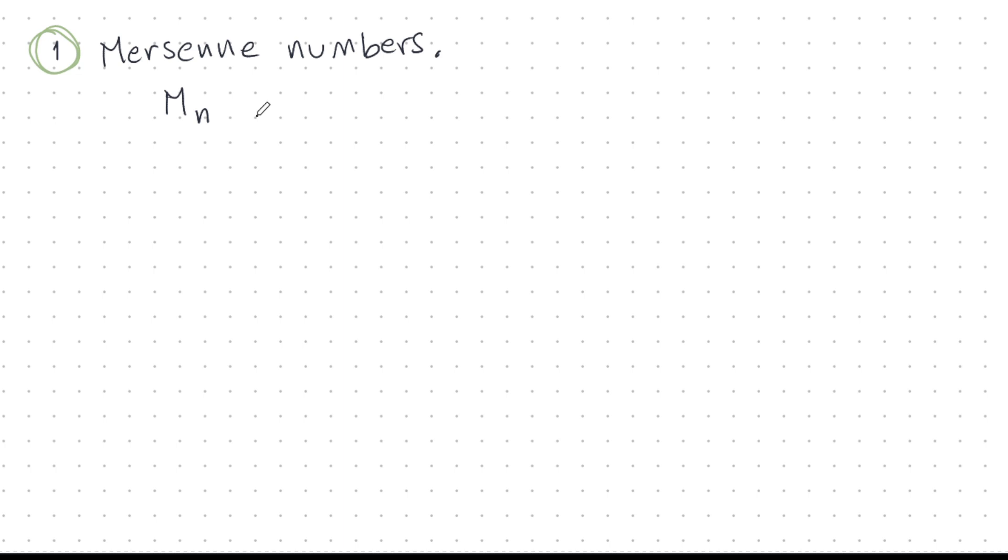Let's start with Mersenne numbers. The nth Mersenne number is like this, 2 power n minus 1, and these numbers are very interesting. So, let's compute the first few. M2 is 3, M3 is 7, M5 is 31. Those are all prime. That's interesting. Let's keep going.